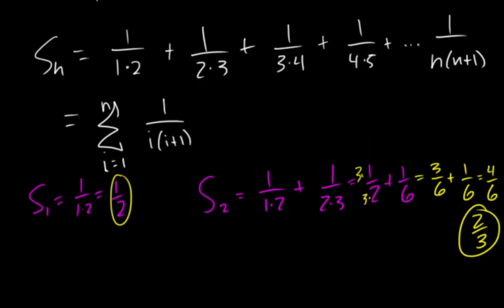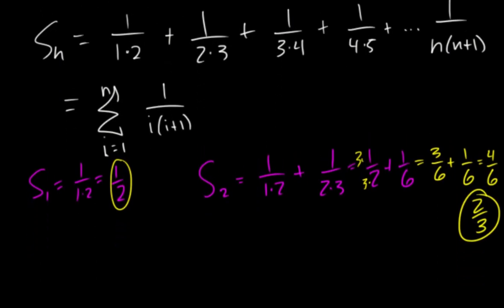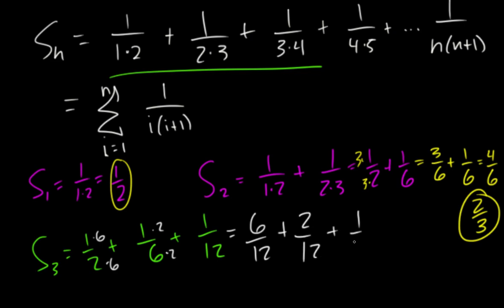All right. So now we've got to do 3 and 4. So now we're going to add up those ones. So it's going to give us just to save some writing that's 1 half, that's 1 sixth and that's 1 twelfth. If we get common denominators on that this one needs 2's this one needs 6's so we get 6 twelfths, 2 twelfths and 1 twelfth and that's 9 twelfths, divide those both by 3 and that's 3 fourths.